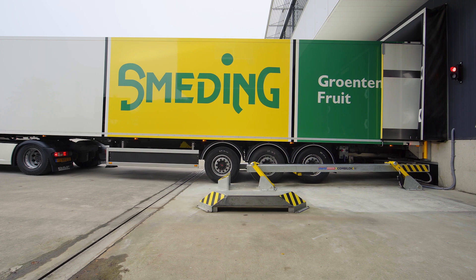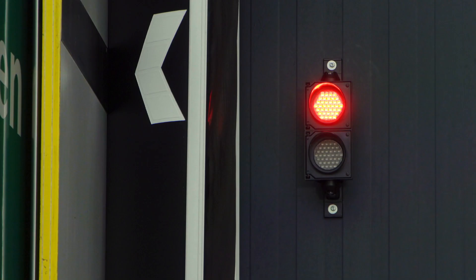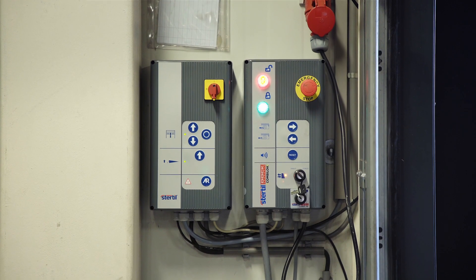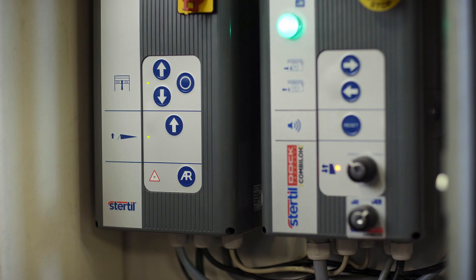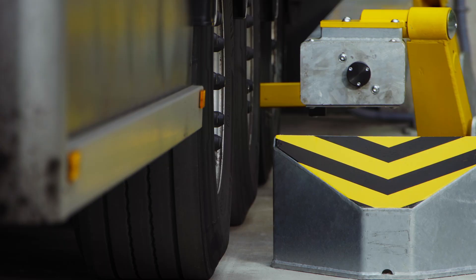Once the vehicle is locked, the traffic light turns red on the outside of the building, indicating that the vehicle has been locked. At the same time, on the inside of the loading bay, the CombiLock G2 control panel indicator light turns green and signals that the vehicle is safely secured by the G2.